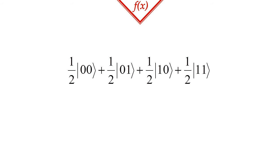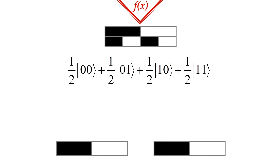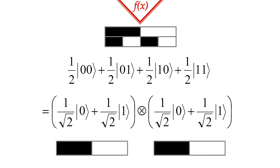Sometimes this can be reversed, and the state of the joint system can be factorized into a tensor product. For example, the vector ket 00 plus ket 01 plus ket 10 plus ket 11 multiplied by a normalization factor can be factorized.